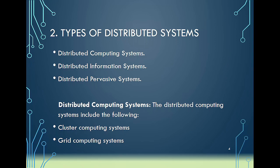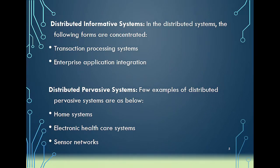We also have distributed information systems — examples include transaction processing systems, management information systems, and decision support systems. And of course we have distributed pervasive systems: systems that can always be accessed anywhere at any time. Examples are mobile-based systems, also referred to as ubiquitous systems. These include smart home systems, electronic healthcare systems, sensor networks, traffic management systems, and smoke detection systems.